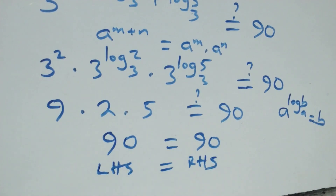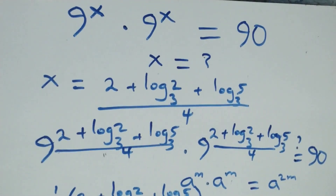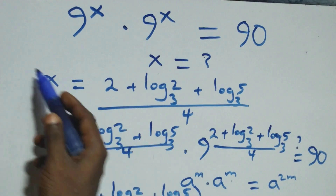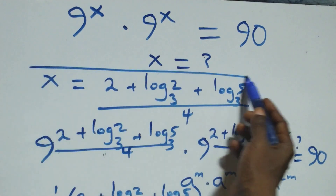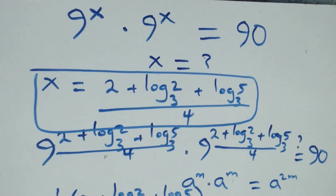Hence here we conclude that x equals (2 + log₃2 + log₃5) / 4, satisfies this given problem. And thank you for watching. Don't forget to subscribe for more videos and turn on the notification bell. Share this video, give me a thumbs up, and leave a comment. See you next class, bye for now.